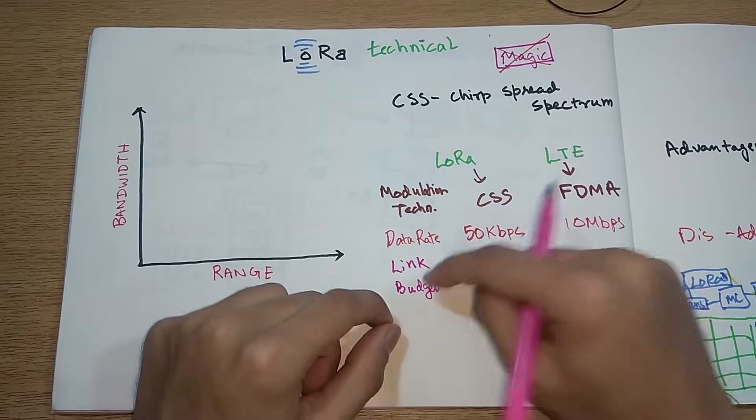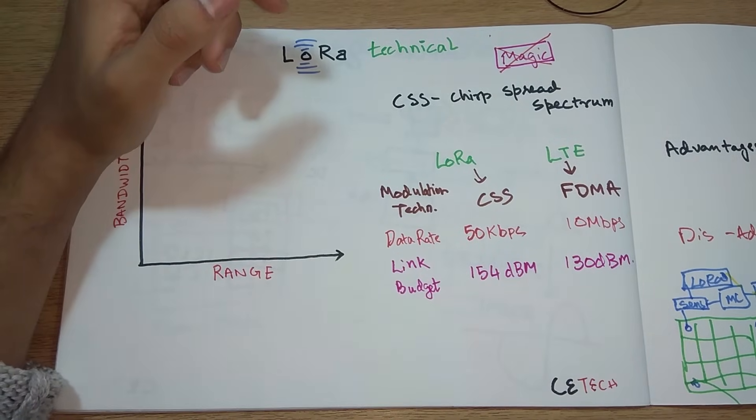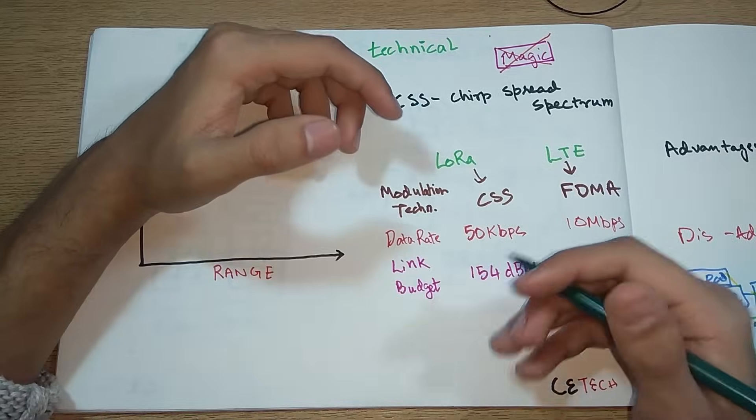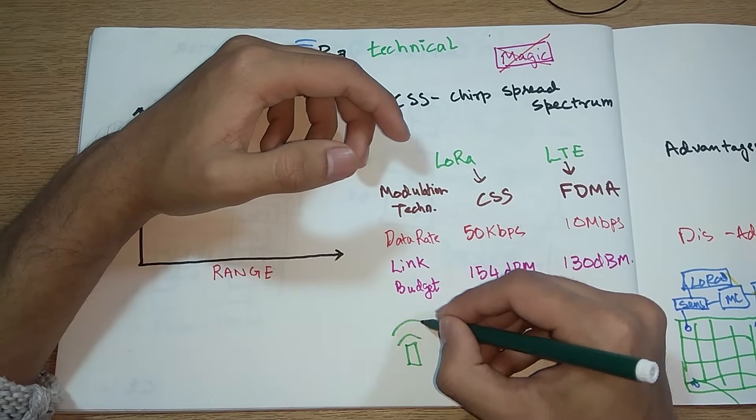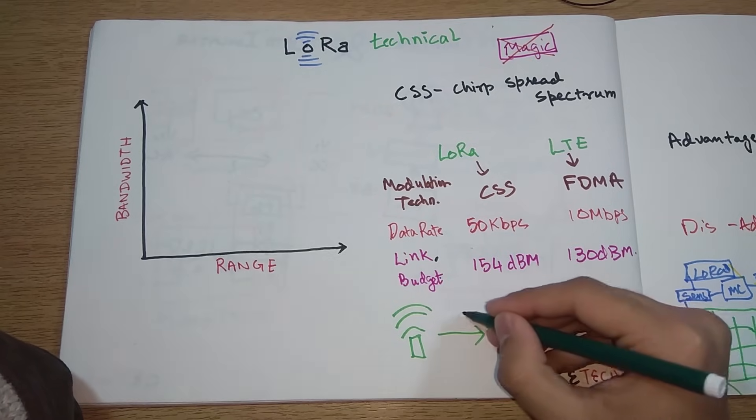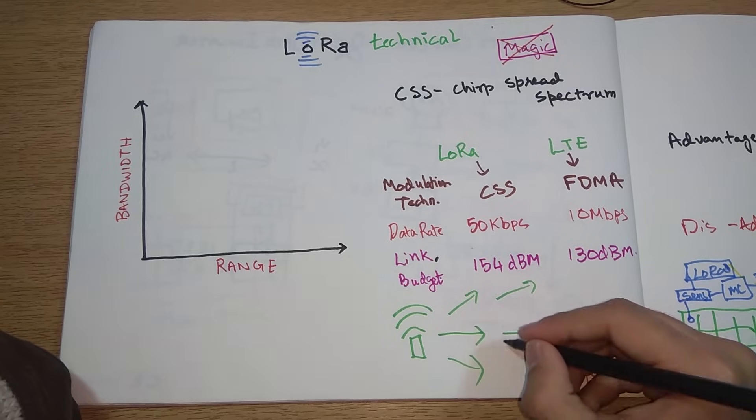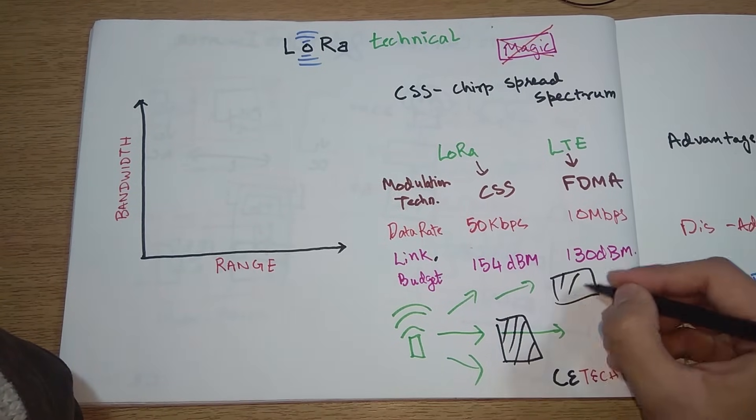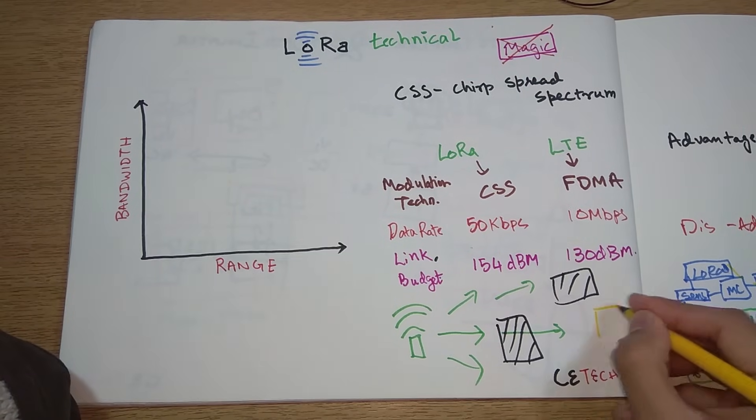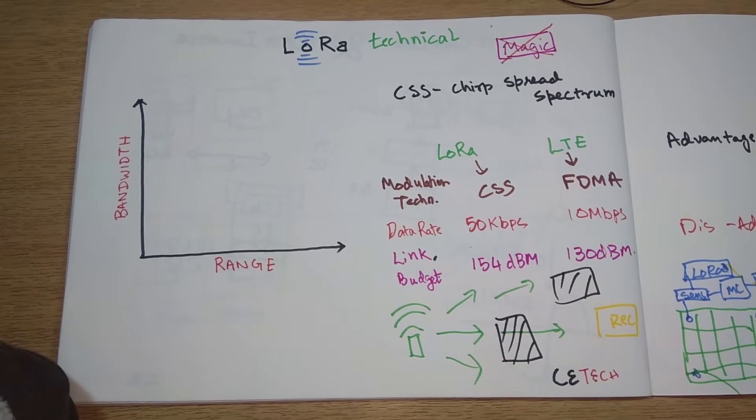You might ask what is link budget. Link budget is just like pocket money, the more you have the better. In this case, link budget, suppose there is an antenna transmitter over here, this will radiate signals all over the place and there will be things in between, so there will be blockages.